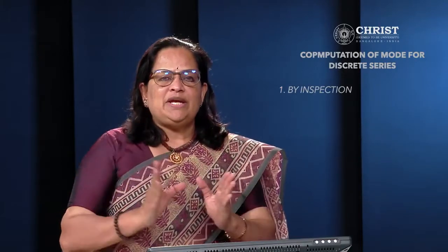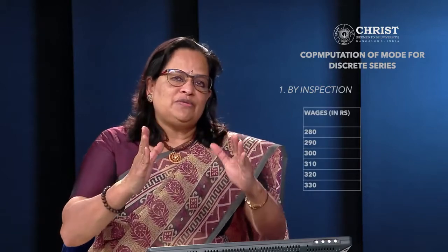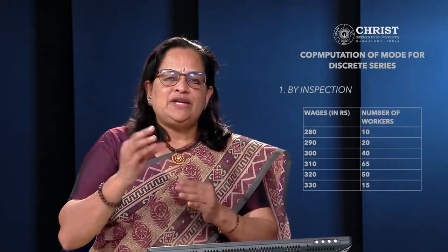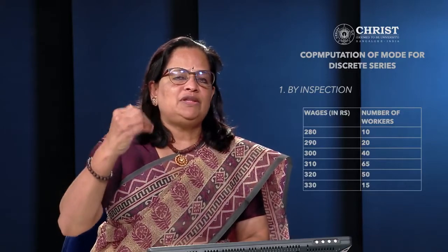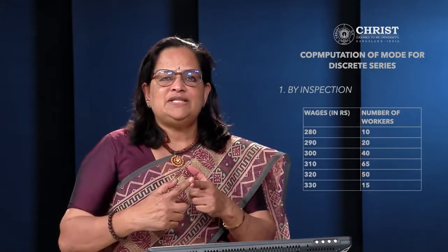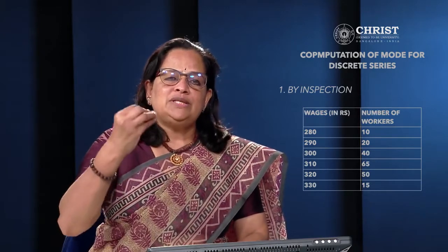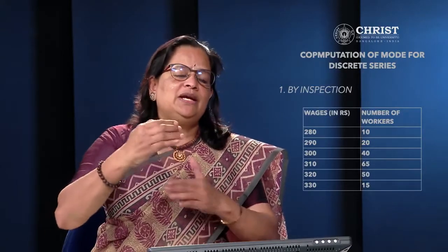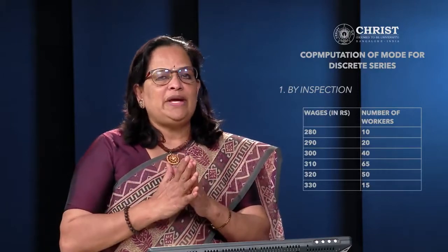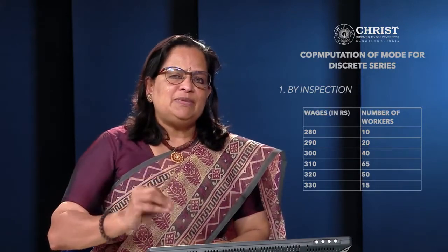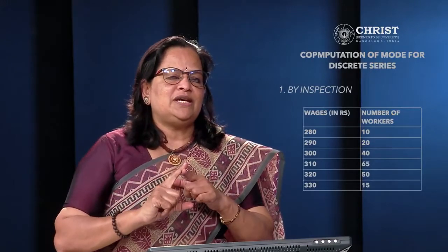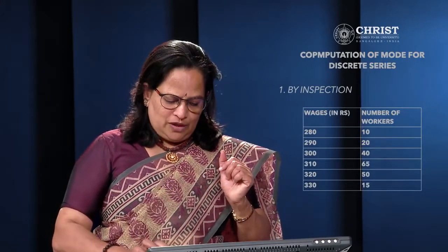Consider this example: wages (the variable) and number of workers. The highest frequency is for wage 310, which is 65, and the next highest is for wage 320 with frequency 50. There is a marginal difference of 15, so you could use inspection and say the modal wage is Rs. 310. However, it is always advisable to prepare the grouping table and analysis table when the marginal difference is present, as that is the best method.